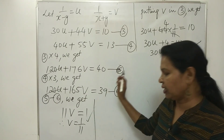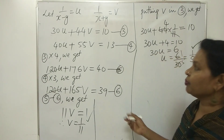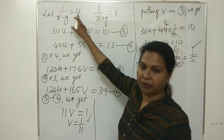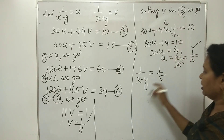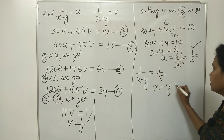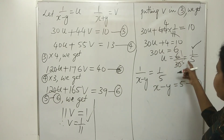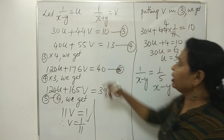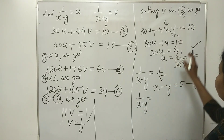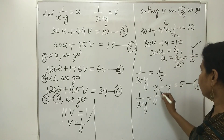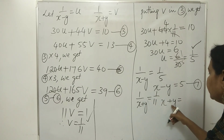So u equals 1/5 and v equals 1/11. Now find the values of x and y. Since 1 divided by (x minus y) equals u equals 1/5, we get x minus y equals 5 — equation 7. Since 1 divided by (x plus y) equals v equals 1/11, we get x plus y equals 11 — equation 8.